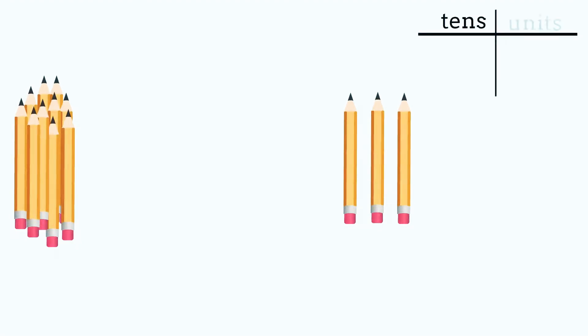So here we've got a group of 10 pencils and 3 more pencils. What's the best way to count these pencils? We might need a table to help us, so if we make a table, then we could have a tens column and a units column.